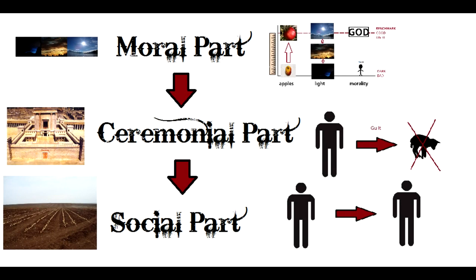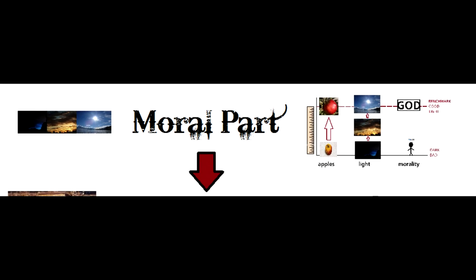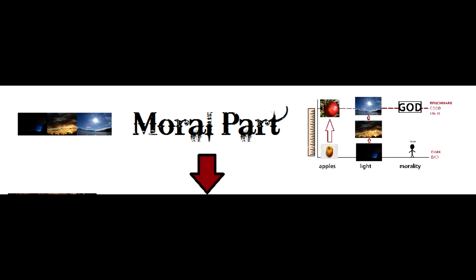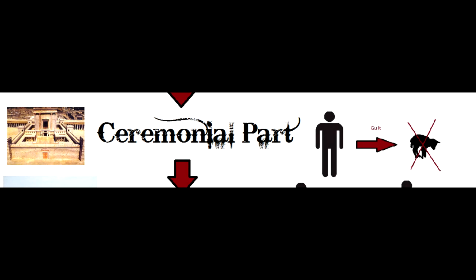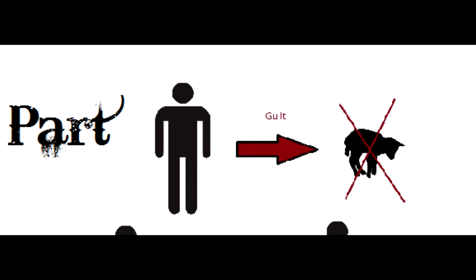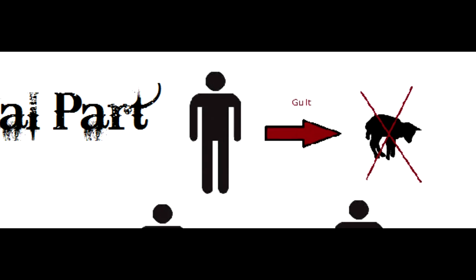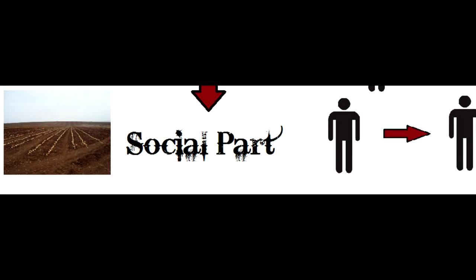So each part of the law interacted. The moral part was designed to reveal how morally bankrupt the people were in the eyes of God, and then the idea was that they would be driven towards the ceremonial part with its rituals to atone for their sin. The shedding of blood would be a potent reminder of the severity of their wrongdoing before a holy God and would introduce them to the idea that another could pay the price for their sins. And then the social part of the law would keep people right with one another and maintain a stable and harmonious society.